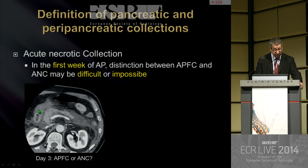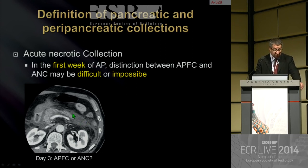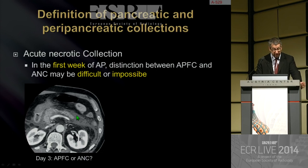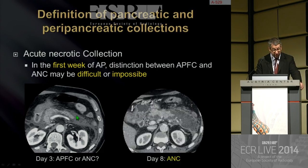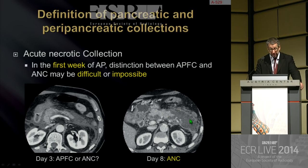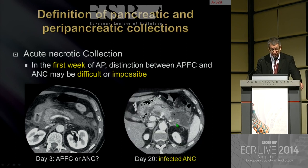In this first example, you have something that looks like APFC — quite homogeneous, low density around the pancreas. It could be acute peripancreatic fluid collection, but it could also be acute necrotic collection, so you have to wait for the next CT. At day three it is ambiguous, but at day eight there is no doubt — it is not APFC; it is an acute necrotic collection, necrotizing pancreatitis. And at day 20, it is infected necrotizing pancreatitis due to the presence of gas.